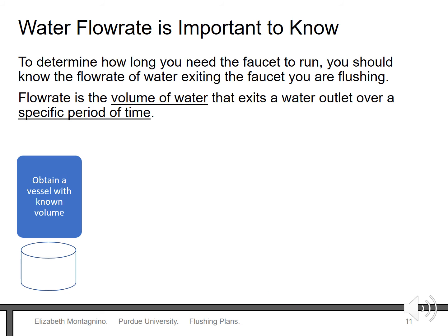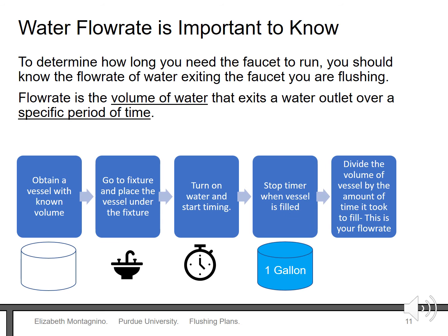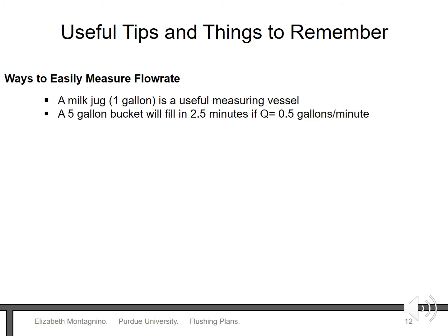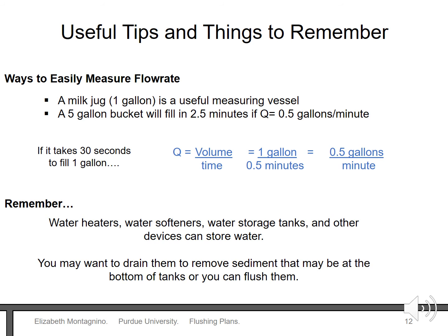Now that we have calculated the volume of water in the pipe, we need to know the flow rate. This will help us determine how long we have to run the faucet to remove all that water. First, get a container with a known volume. Turn on the faucet all the way and see how long it takes to fill the container. Divide the volume of the container by the amount of time it took to fill — this is your flow rate. Easy ways to measure flow rate include using a milk jug, which is one gallon. For example, a five-gallon bucket will fill in 2.5 minutes if your flow rate is 0.5 gallons per minute, and if it takes 30 seconds to fill one gallon your flow rate will be 0.5 gallons per minute. Remember when you flush to consider the amount of water stored in tanks and other devices.